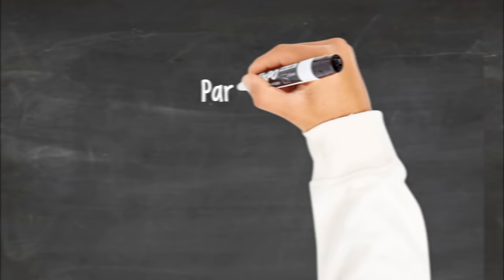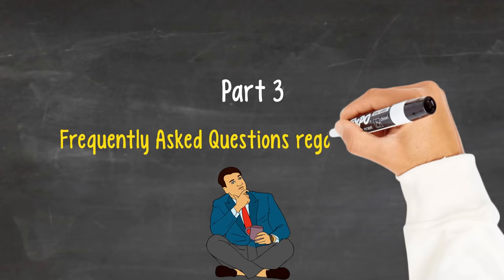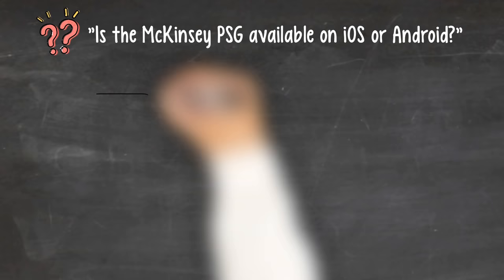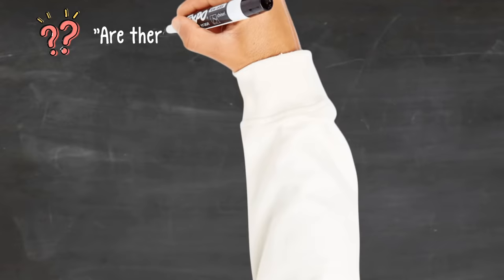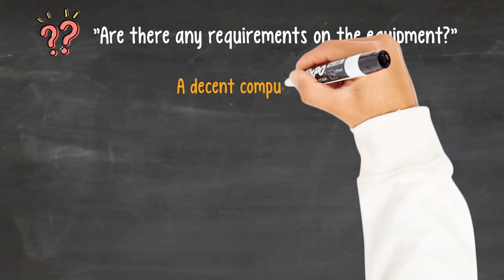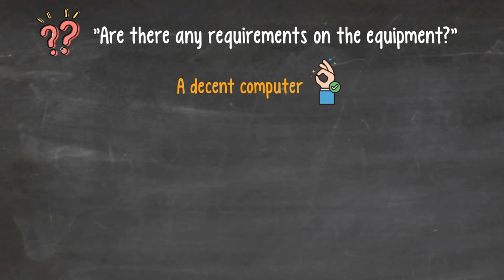Part 3. Let me take advantage of this opportunity to clear up some of the most frequently asked questions regarding the PSG. Question 1. Is the McKinsey PSG available on iOS or Android? No. At least, not yet. For now, the PSG, both the real McKinsey ones and our simulation, is available only on desktop. Both Mac and Windows are okay. Question 2. Are there any requirements for the equipment? All you need is just a decent computer, which you most likely already have. A $300 office laptop will do just fine. There's no need to spend $1,500 on a Lenovo ThinkPad just to take this PSG.